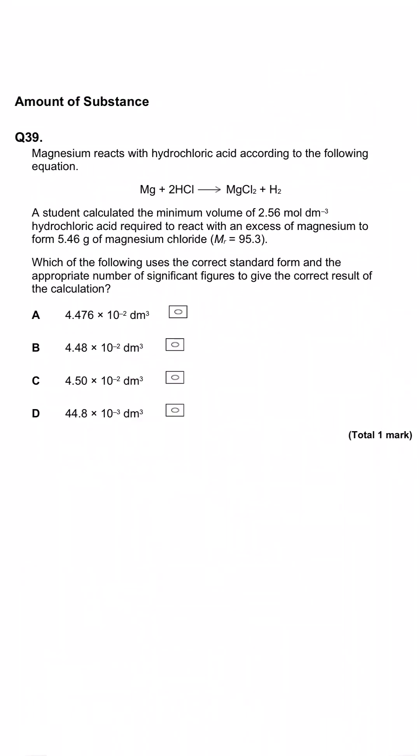Magnesium reacts with hydrochloric acid according to the following equation. And then a student calculated the minimum volume of 2.56 moles per decimetre cubed concentration hydrochloric acid required to react with an excess of magnesium to form 5.46 grams of magnesium chloride. Which of the following uses the correct standard form and the appropriate number of significant figures to give the correct result for the volume of hydrochloric acid. So first of all, it says give the correct standard form. If we look down these options, we can see instantly that D does not obey the rules of standard form. We should only have one digit before the decimal place. And this has got 44.8 before the standard form. So D is wrong.